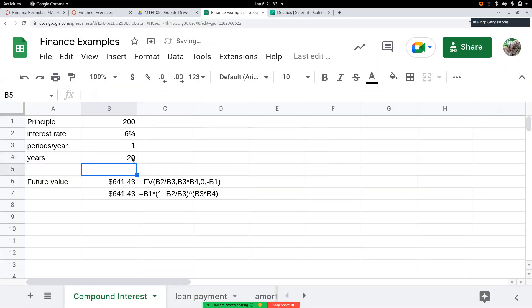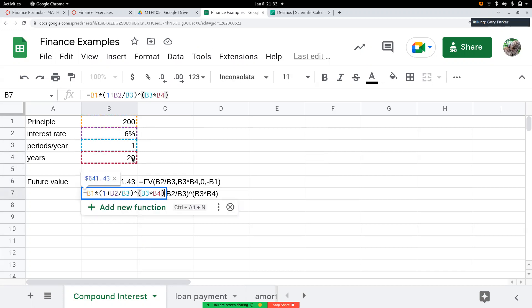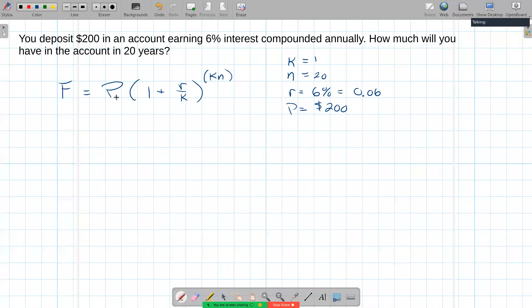I have two different formulas here, each are giving the same result. So the second one here is what I have as the compound interest formula. So B1, that's my principal, my P, right here.